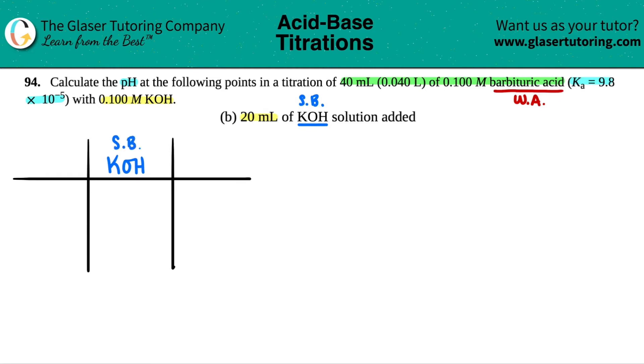Now the other components is your buffer system that you might form during this battle between strong base and weak acid. Now they didn't tell us specifically what barbituric acid looks like. I don't even know if I'm saying it correctly. Barbituric, barbituric, barbecue acid. I don't know. We're just going to call this a general HA.